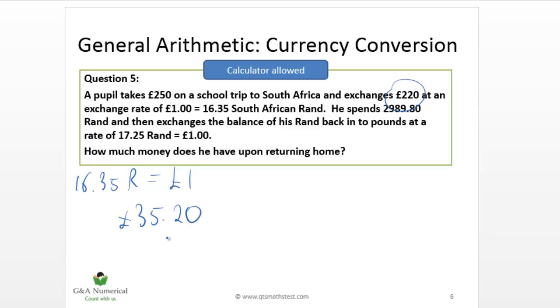But is that the answer we need? It's actually not, because there's a bit of a sting in the tail with this question. So notice, he takes 250 pounds with him on the school trip, but he doesn't exchange all of it. He only exchanges 220 pounds. So he left an extra 30 pounds aside for whatever reason, who knows, personal reasons.